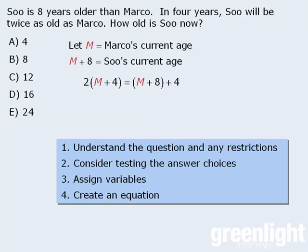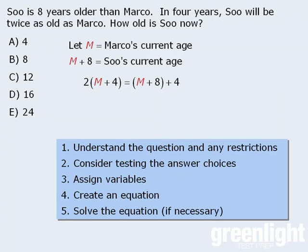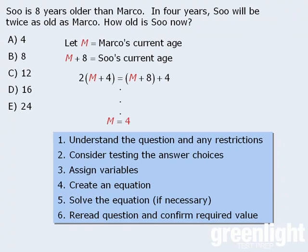Once we have written an equation, our next step is to solve the equation if necessary. I say if necessary because if the question is a data sufficiency question, we may not have to solve the equation. Once we solve the equation, it's important that we do not instantly begin looking for the value among the answer choices. Before selecting any answer, we should first re-read the question and confirm that we have found the required value. In this question, we are asked to find Sue's age, but the equation was written in terms of m, and m represents Marco's present age. Since Sue's present age is equal to m plus 8, and we now know that m equals 4, we can conclude that Sue's present age is 12, which means the answer here is C.